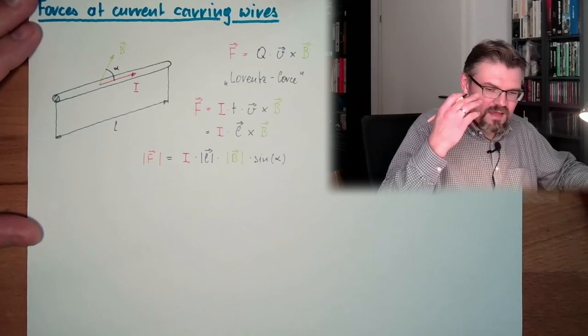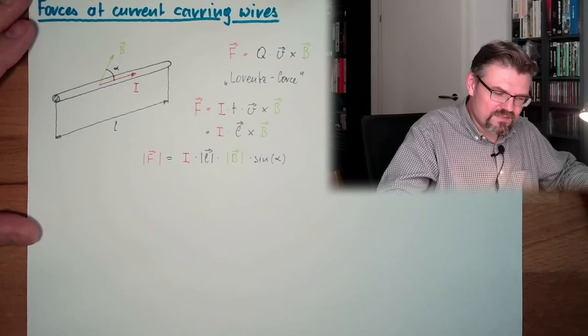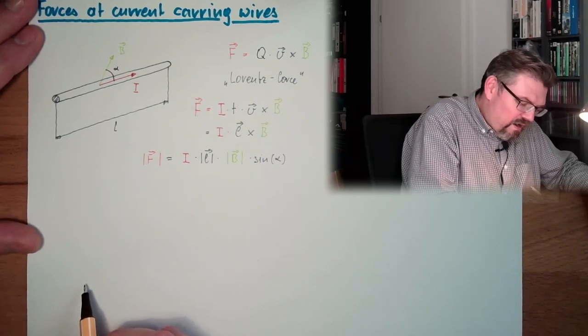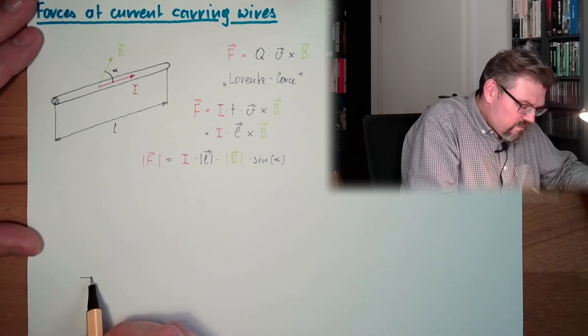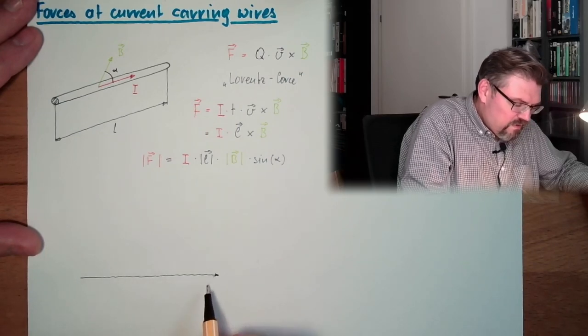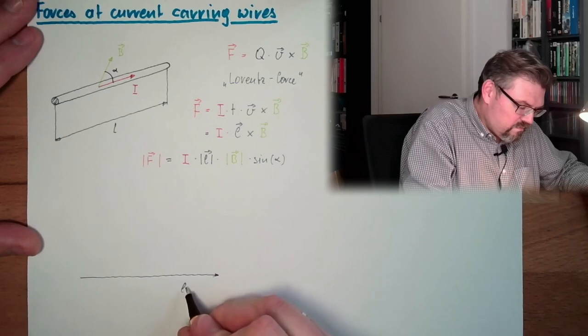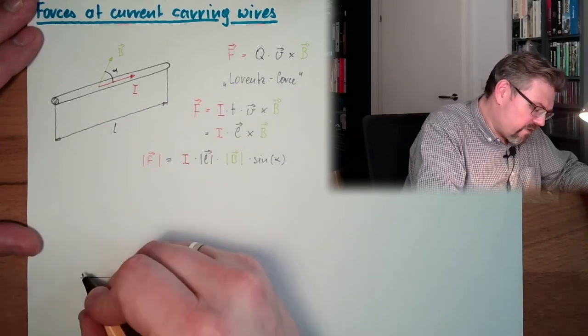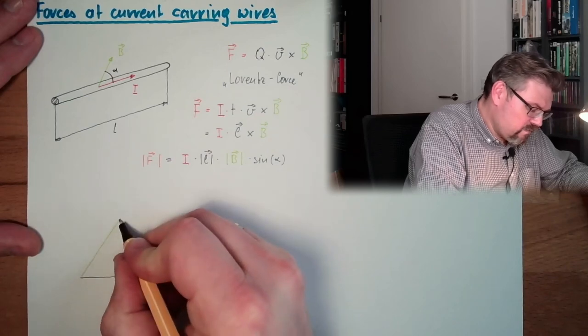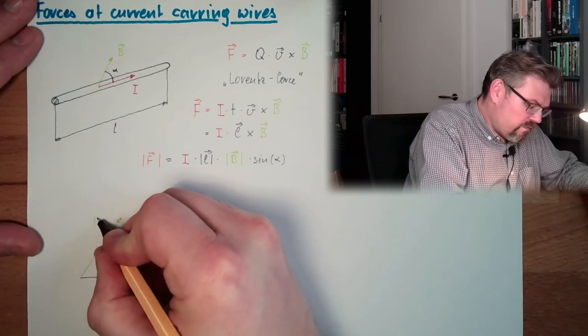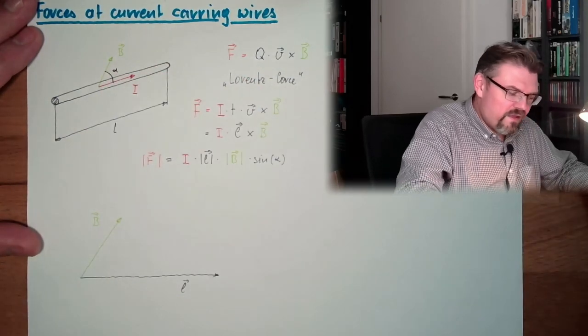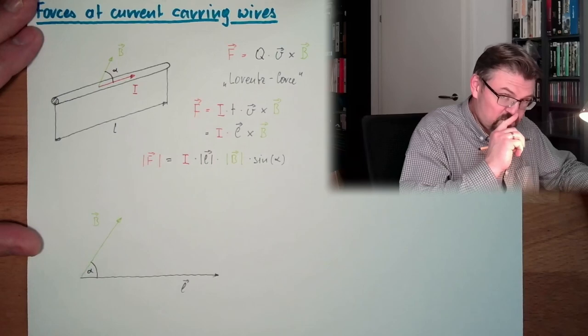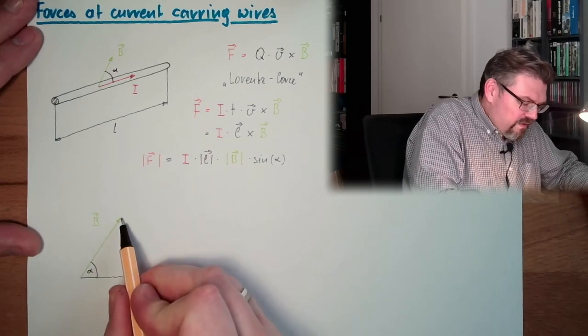How can we memorize this easier? Let's see. So here we have our L. Draw this once again. Here we have our L. This is our L vector. From here to here. Then we have our B vector. Here. This is our B vector. We had this angle alpha. And now, let's have a look.